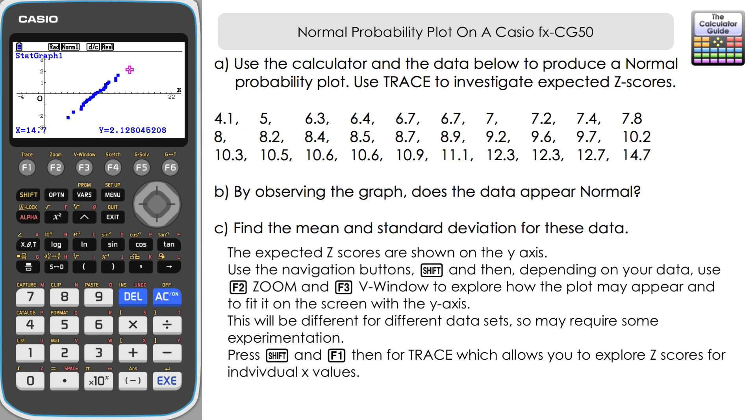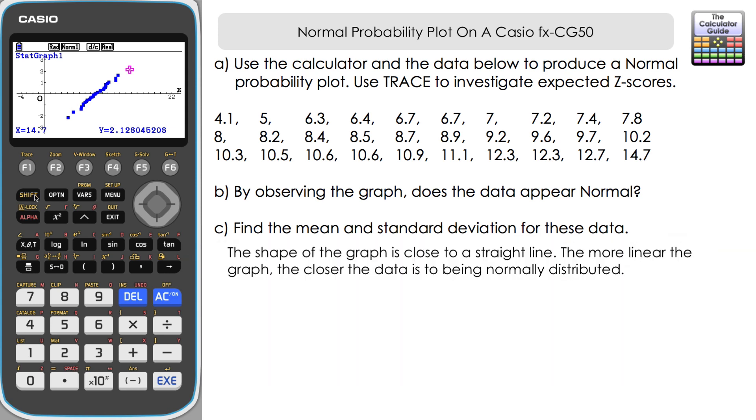Let's have a look at part B. If we just come back and take a look at the shape of the plot here, you can see that we've got quite a linear graph. It's quite close to being a straight line. And the closer it is to a straight line, then the closer it is going to be to a normal distribution. So as this graph is quite linear, it does appear to be normally distributed.